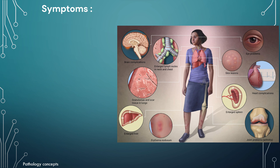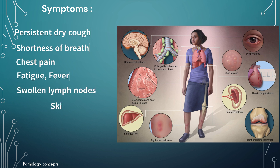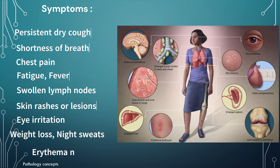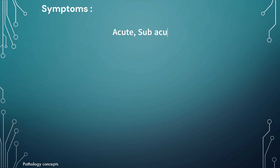Now let's see the symptoms. Symptoms of sarcoidosis can vary greatly depending on which organs are affected. Most common symptoms include persistent dry cough, shortness of breath, chest pain, fatigue, fever, swollen lymph nodes, skin rashes, eye irritation or vision problems, weight loss, night sweats, and erythema nodosum. Sarcoidosis may be acute, subacute, or chronic; however, in the majority of cases it is entirely asymptomatic.